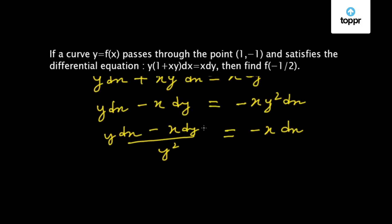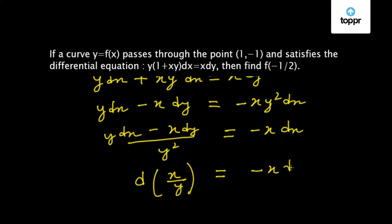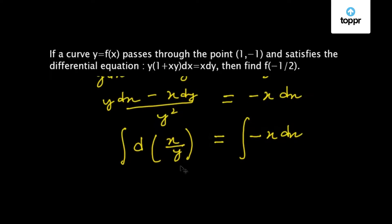Now we can write the left hand side as d(x/y), and this equals minus x dx. So let us integrate both sides. After integrating both sides we will get x/y = minus x²/2 plus a constant c.